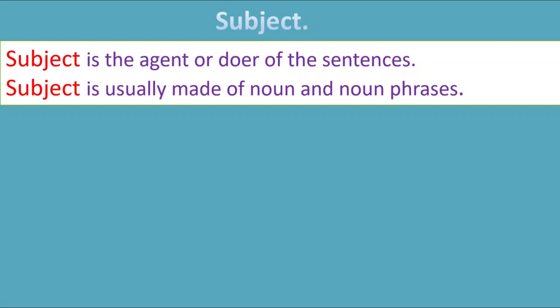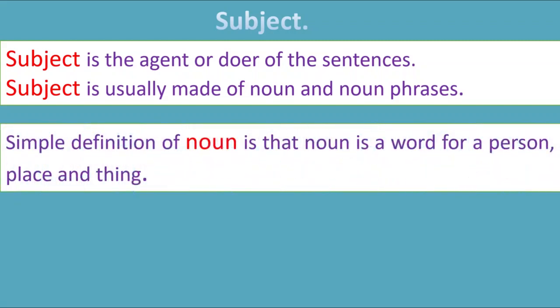Subject is usually made of nouns and noun phrases. A simple definition of noun is that a noun is a word for a person, place, and thing — we use it to name things. For example, apple and the howder — they are all nouns.